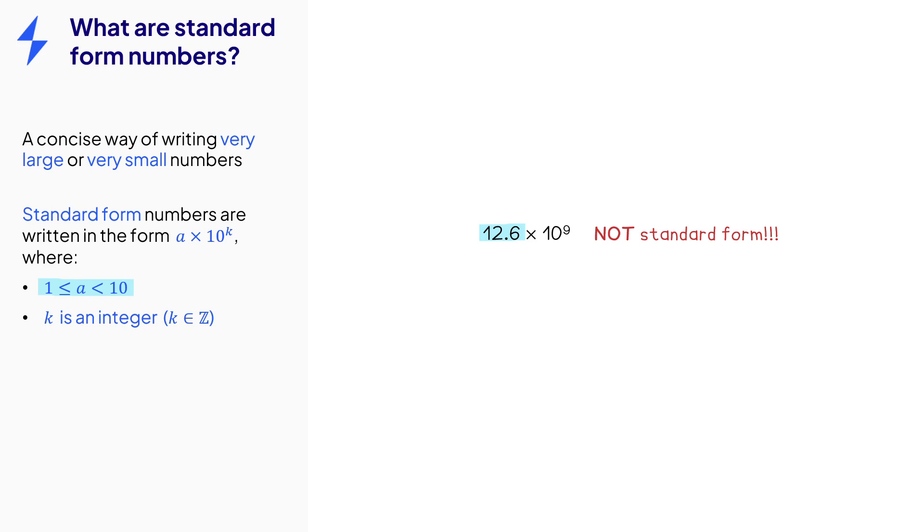We can fix this, however. So 12.6, well that's equal to 1.26 times 10. So we can rewrite it in this form. Then laws of indices tell us that 10 times 10 to the power of 9 is 10 to the power of 10. So we can rewrite that number like this: 1.26 times 10 to the power of 10.